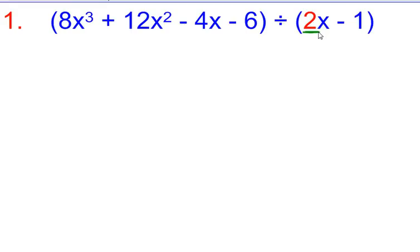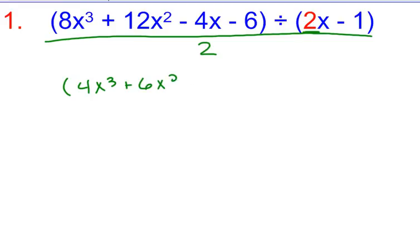So what you're always going to start by doing is you will divide your entire problem by 2. Whatever that number in red is, is what you change your problem by. So I'm going to divide this whole problem by 2, meaning I would have 4x³ + 6x² - 2x - 3, and then divided by x - 1/2. And that's my new original problem.